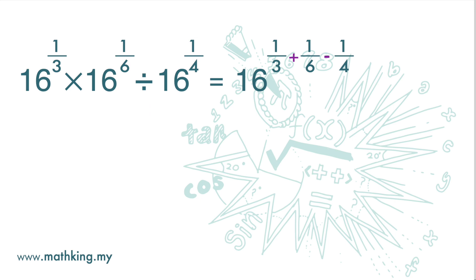So, we have 1 over 3 plus 1 over 6 and then minus 1 over 4.